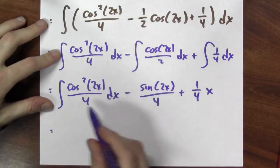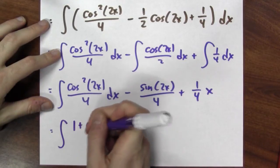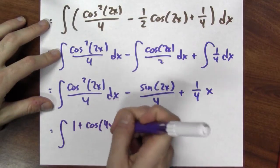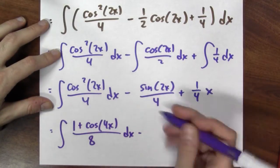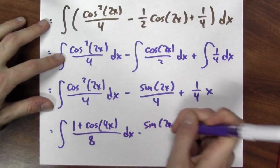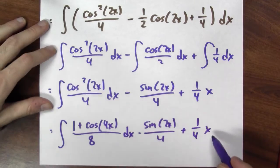How does that go? Well, I get instead of this, the integral of 1 plus cosine 4x. And instead of over 4, it's now over 8. And then I'll just copy down these things again. Sine 2x over 4 plus 1 quarter x. Now I can put it all together.